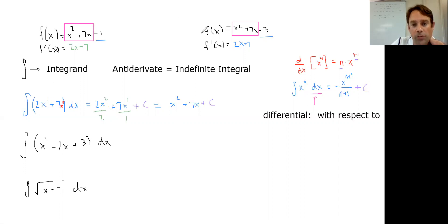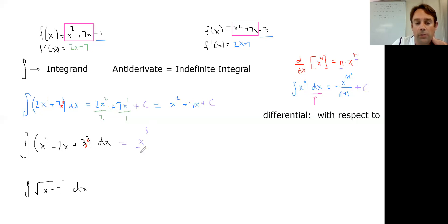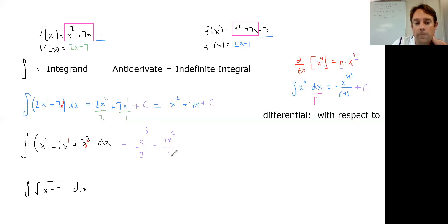Let's see how you did. For x² − 2x + 3: take x² — add one to the exponent, divide by three, giving (1/3)x³. Take −2x — exponent was one, add one to get two, divide by two, giving −x². The 3 is 3x to the zero — add one to the exponent, divide by one, giving 3x. So the result is (1/3)x³ − x² + 3x + C.